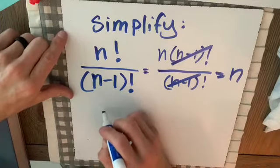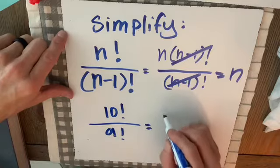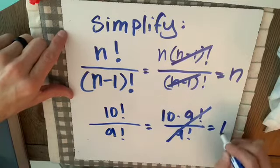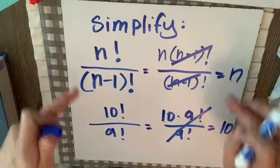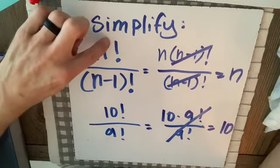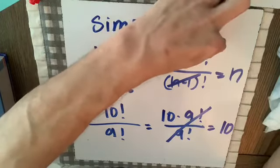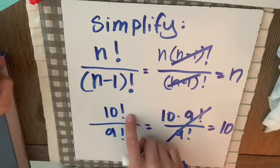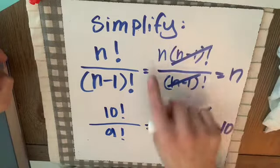Don't believe me? Put in some numbers: say n is 10. 10 factorial over 9 factorial is the same as 10 times 9 factorial over 9 factorial, which gives 10. I'm doing this same problem but with n's instead of concrete numbers. This is an important concept: n factorial can be written as n times (n-1) factorial.